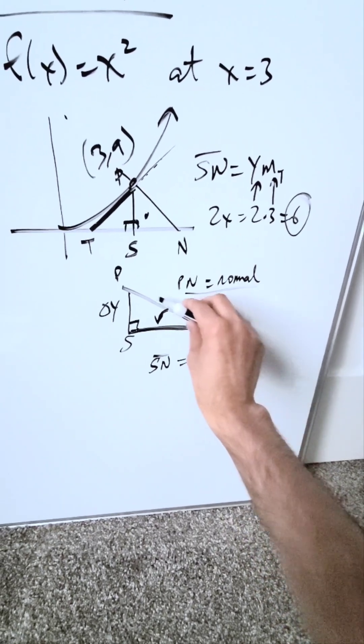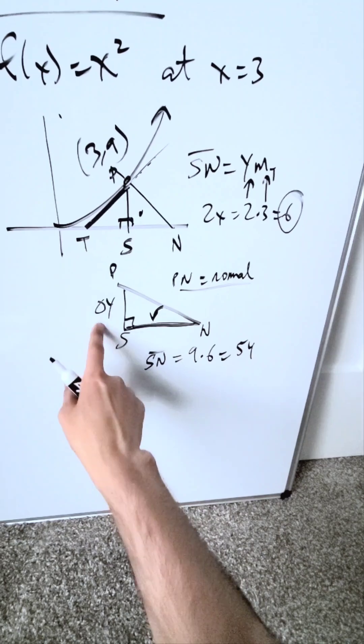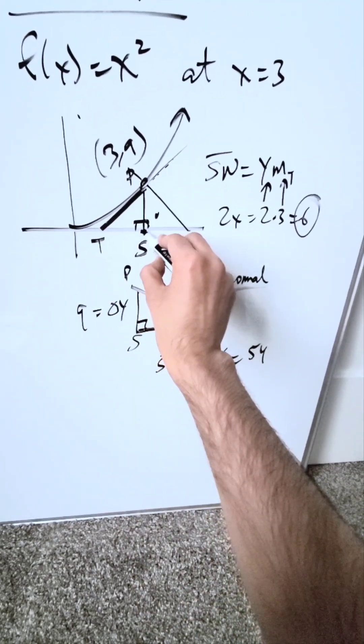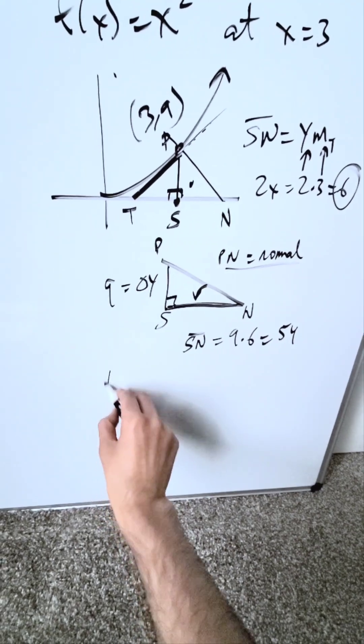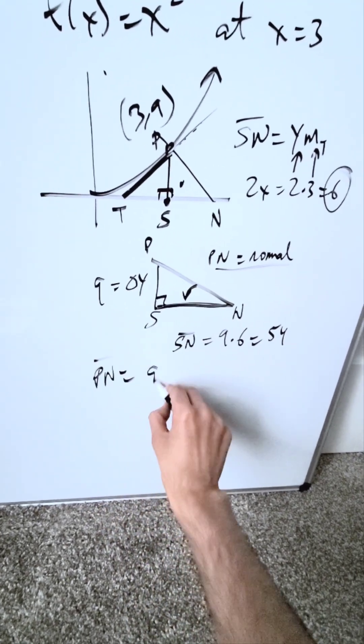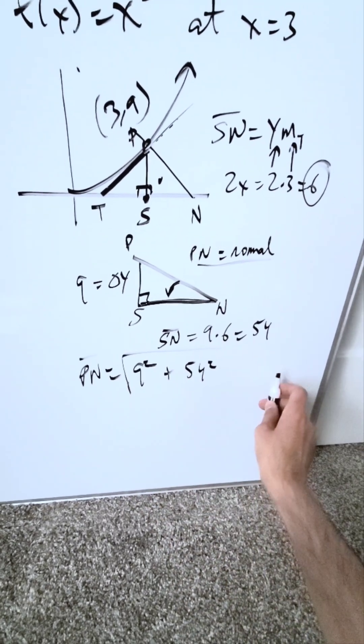If I want to determine the length of that normal, I can, because I have a squared plus b squared equals c squared. What was my delta y? It was nothing other than 9. I have 3 comma 0, 3 comma 9. The delta y is 9. I can determine my length of my normal as being 9 squared plus this subnormal squared, 54 squared, and root. And you can calculate that.